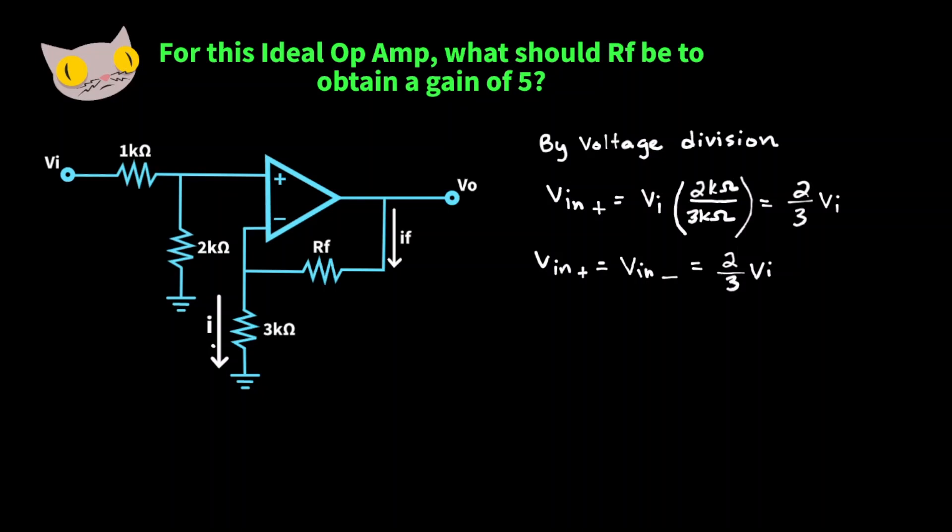So the value for this current, I, would be VIN negative over 3k ohms, which is equal to two-thirds VI over 3,000 ohms. Now this op-amp draws no current, meaning I is equal to IF.